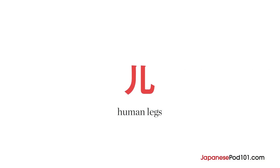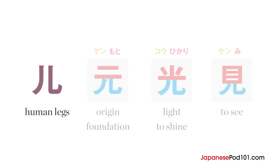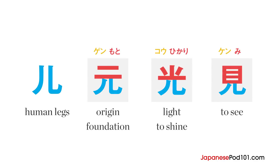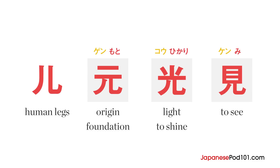The human legs radical isn't a kanji on its own, so you'll only see it as a part of another kanji. In the case of the original examples, common readings are provided for the origin or foundation kanji, for the kanji meaning to shine, and the kanji meaning to see.